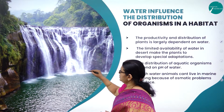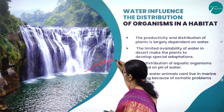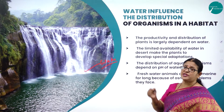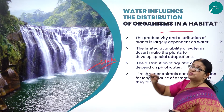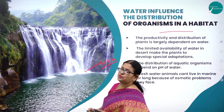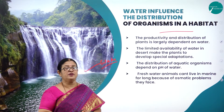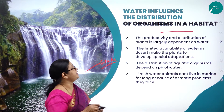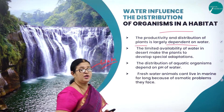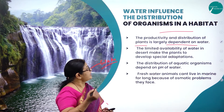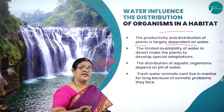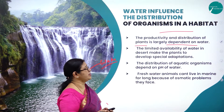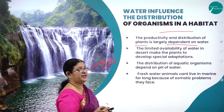Now let us look at how important water is. Water is one of the very important abiotic factors. The productivity and distribution of plants is largely dependent on water — more water means more productivity and greater plant growth. The limited availability of water, particularly in desert conditions, is a key factor influencing organisms.